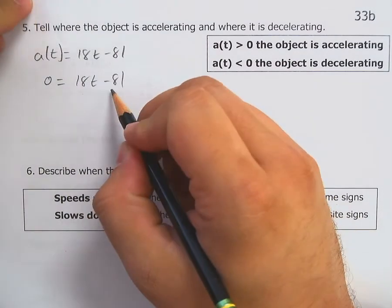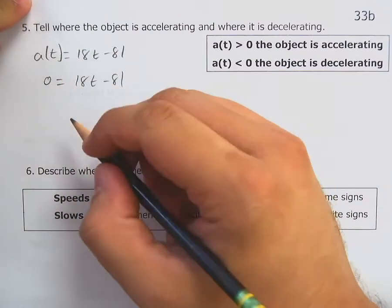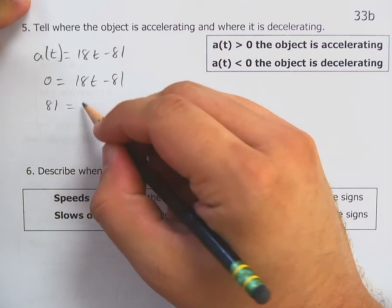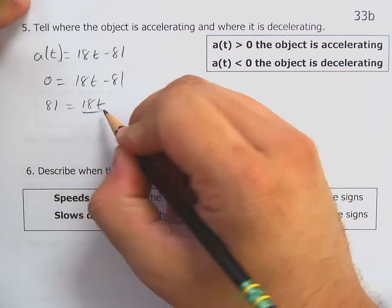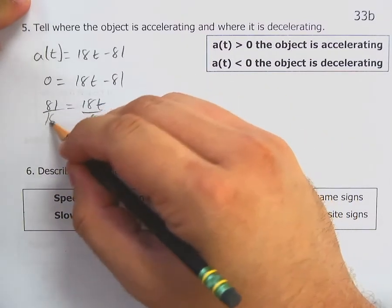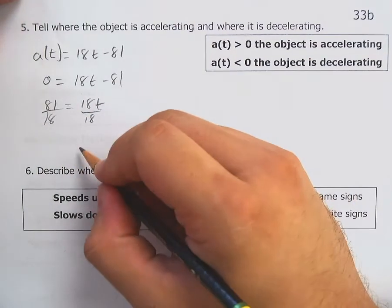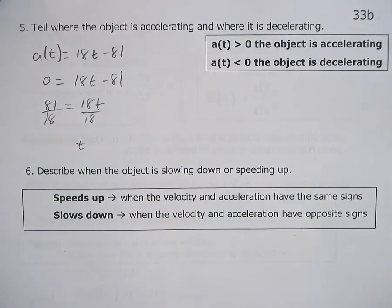And we've got 18T minus 81 equals zero. So take your 81 to the other side. You get 81 is 18T. Divide by 18. And just for the sake of time, once you divide by 18, you get T is equal to 4.5.